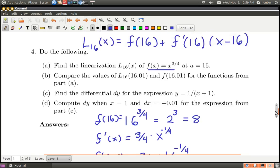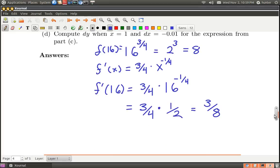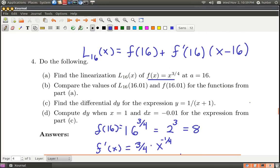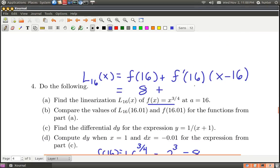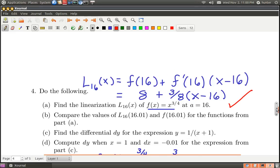Okay, so now we've got our data. We can just write this in. This is going to be equal to 8, we just figured that out, plus f'(16), which is 3/8, times (x minus 16). All right, so what we just did here is figure out part A. So very good.